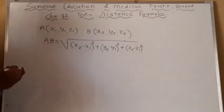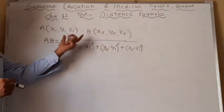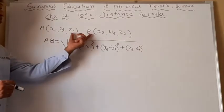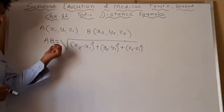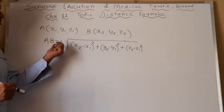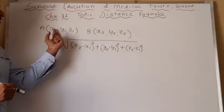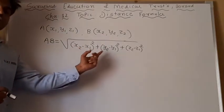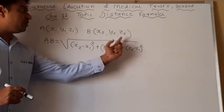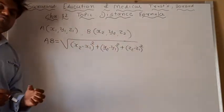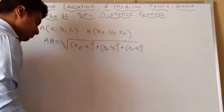So it is a simple topic. Points A and B are given and we need to find out the distance between both these points. So using the distance formula: AB is equal to under root of X2 minus X1 whole square, plus Y2 minus Y1 whole square, plus Z2 minus Z1 whole square.